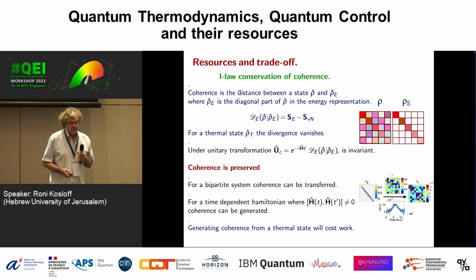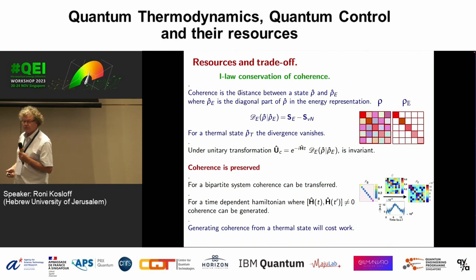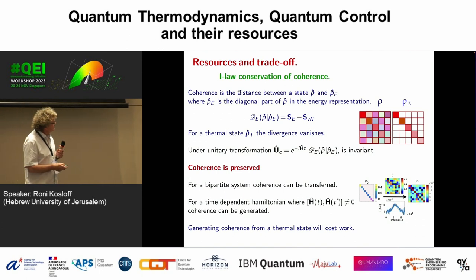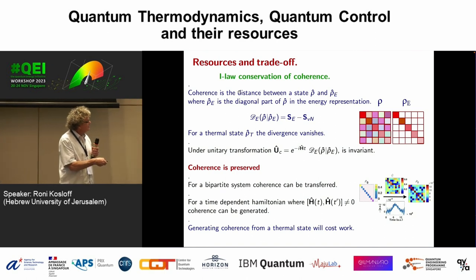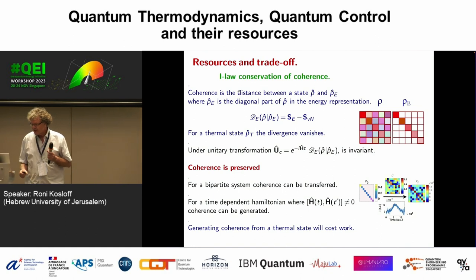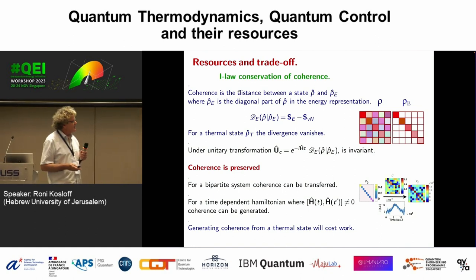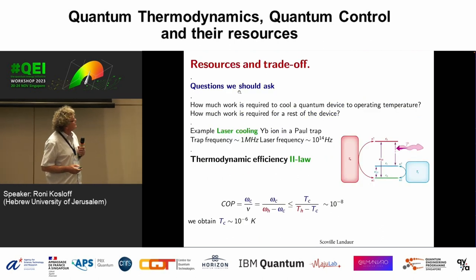The lesson is: if I want to do things semi-classically, generating coherence costs energy — or more appropriately, costs work. This is my lesson from the first law of thermodynamics, and then we can think about resources trade-off.